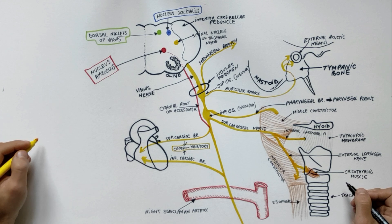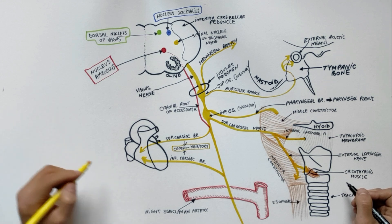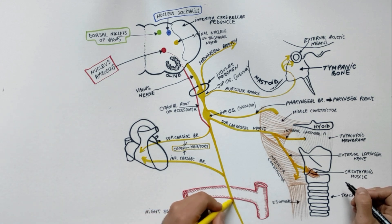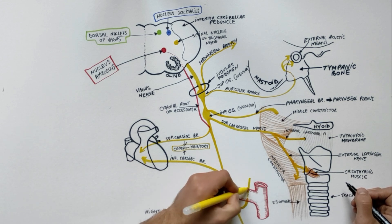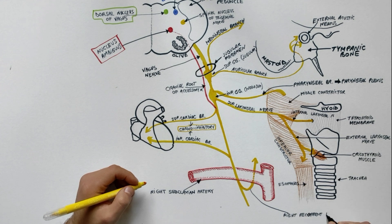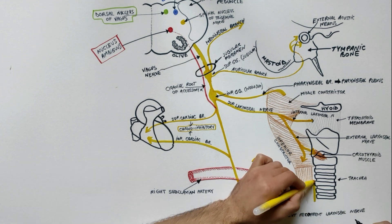There are two recurrent laryngeal nerves, right and left, and are not symmetrical. The left nerve loops under the aortic arch and the right nerve loops under the right subclavian artery and travels upward to reach the tracheoesophageal groove.